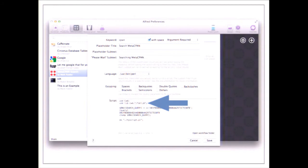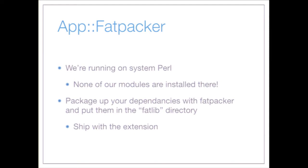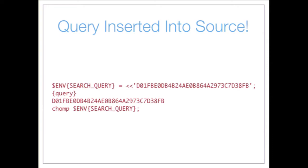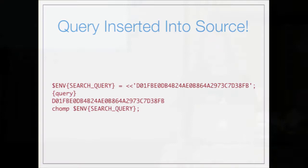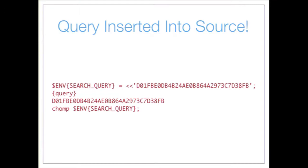Up here is a directive to use fat::lib. Since we're running on the system Perl, none of my normal modules are installed there. So I package up all my dependencies with App::FatPacker and stick them in a fatlib directory, and I can ship them with the extension. I can hand this extension to someone else and they don't need anything special installed apart from Alfred. Alfred substitutes the text you're typing directly into the source code wherever it sees the {query} curly braces.